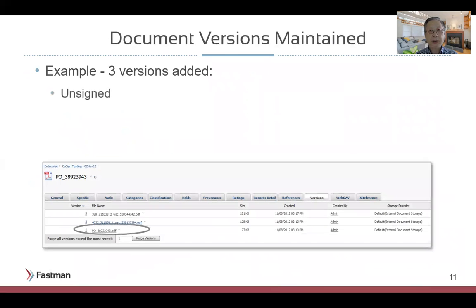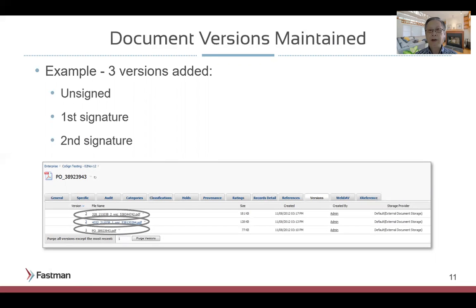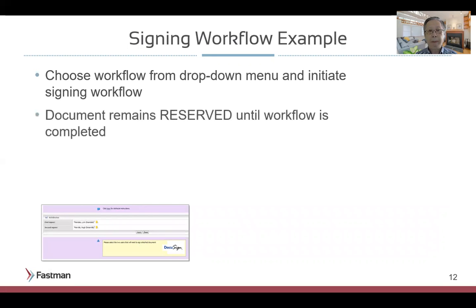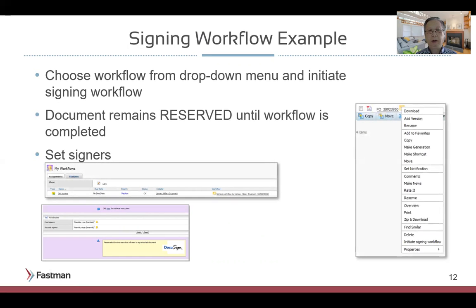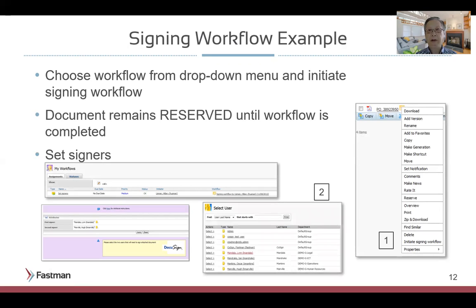Document changes are tracked and kept in your Extended ECM environment as different versions as the review and sign process progresses. There can also be scenarios where you have external signatories in an actual work environment, and this can be configured. You can select the appropriate signing workflow from a predefined list, and the document will be managed along the way.